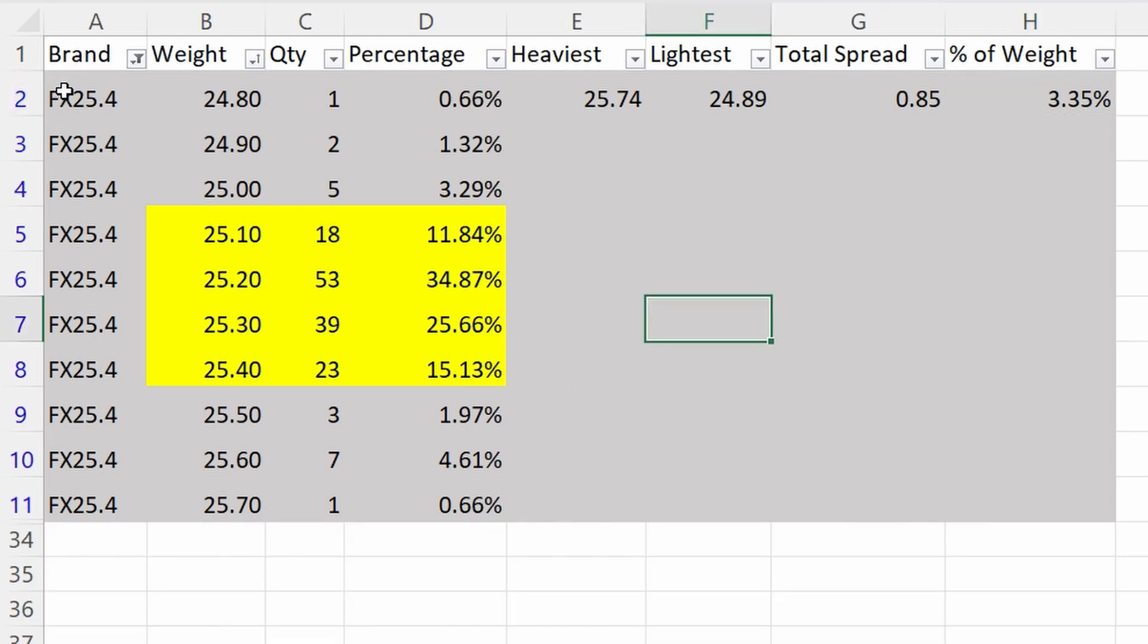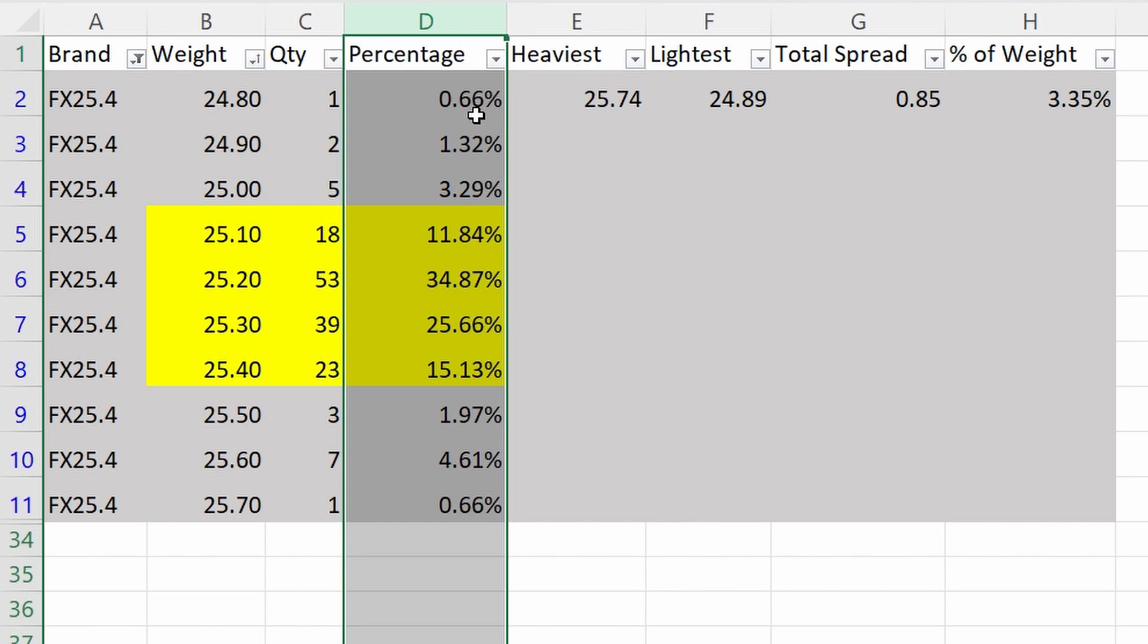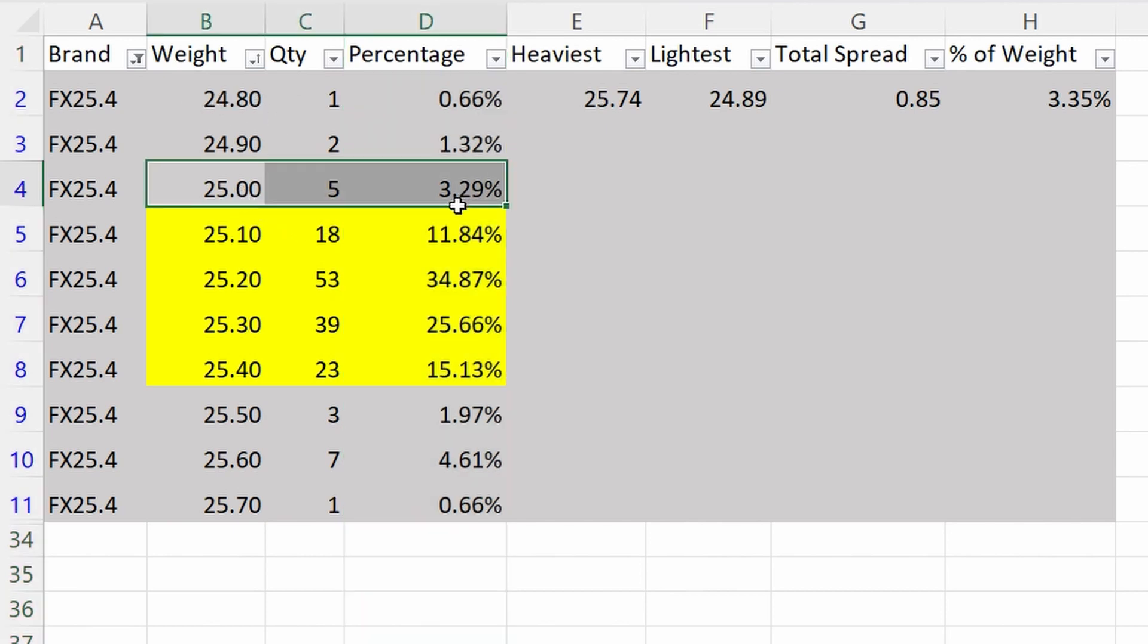If we look at the FX first, here's the pellet. Everything is 25 caliber. All these are 25.4 grain or 25.39 grain. I separated everything by one-tenth of a grain in weight. Put the quantities in column C. Column D is the percentage of pellets that fell within that grain weight. So if we look here, 5 pellets is 3.29% of the total sample size.